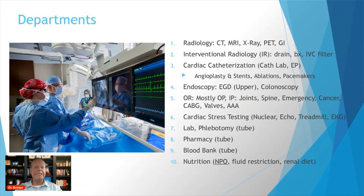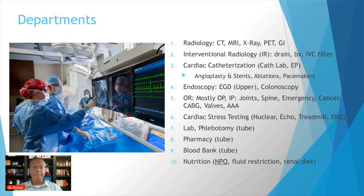Another department is endoscopy, where gastroenterologists do upper endoscopies — referred to as EGDs — or colonoscopies. Then of course there's the operating room, which is mostly outpatient, but you also have inpatient surgeries for joints and spine, emergency surgeries like a ruptured appendix, cancer surgeries on tumors, coronary artery bypass grafts, valve replacements like aortic valve replacements. An AAA — abdominal aortic aneurysm — is a very significant vascular surgery performed on an inpatient basis.